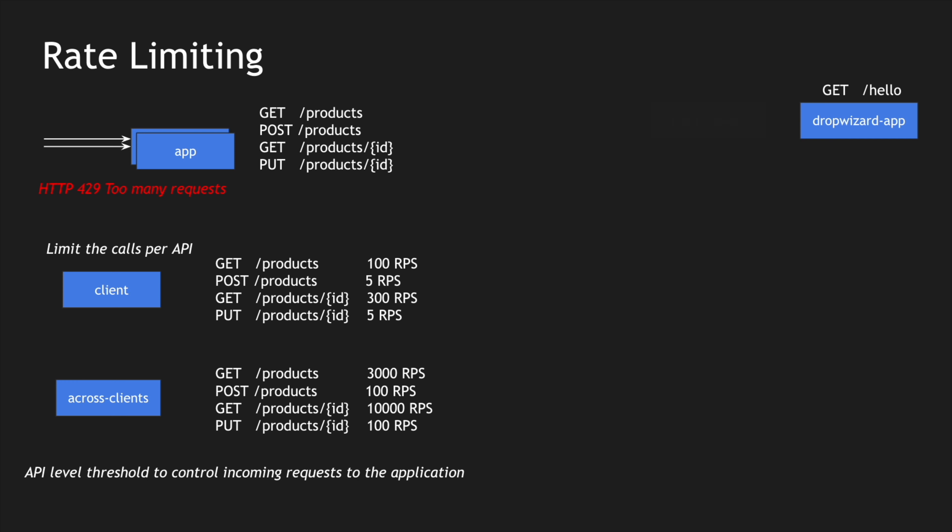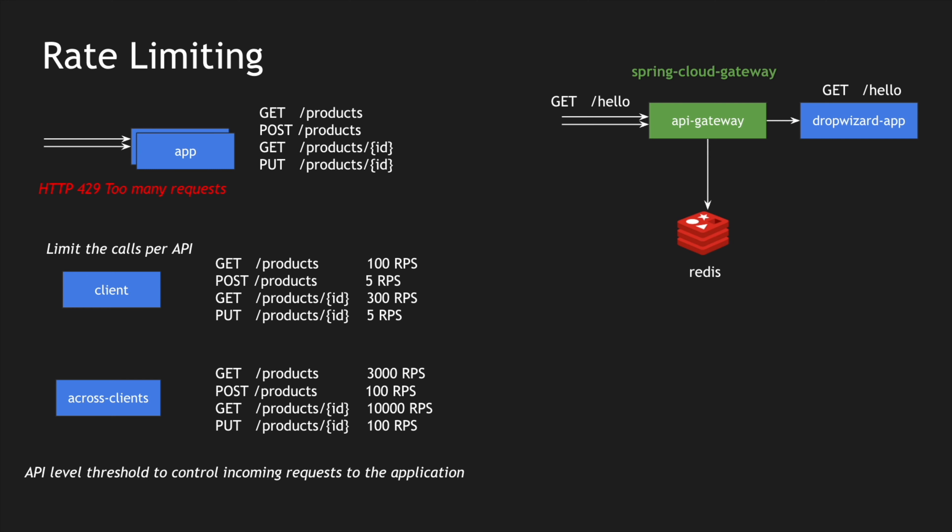I'm going to use a simple Dropwizard application. I have created an endpoint called hello just for our example, and I'm going to create a new API gateway using the Spring Cloud Gateway library. Within Spring Boot you can add the Spring Cloud Gateway library and convert that Spring Boot application into an API gateway. You can easily add rate limiters into that gateway — Spring Cloud Gateway provides them out of the box. All the rate limiting data is stored inside Redis.